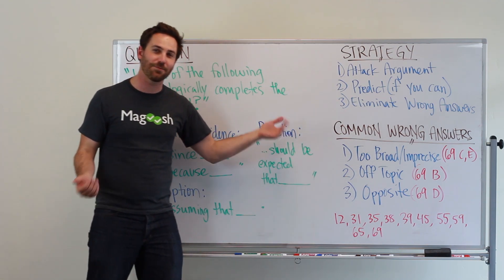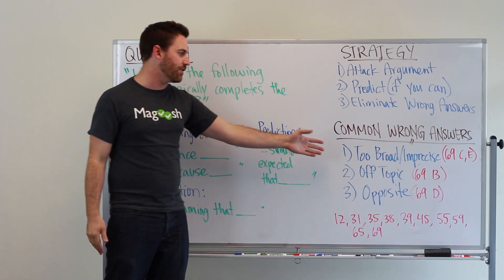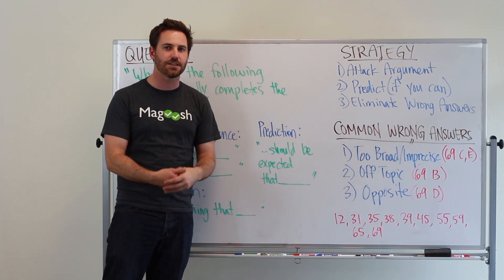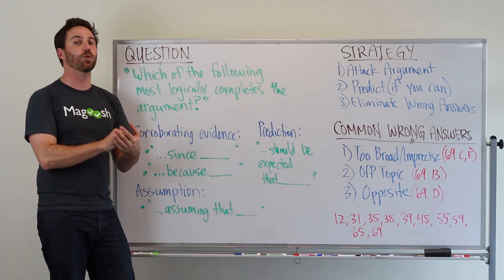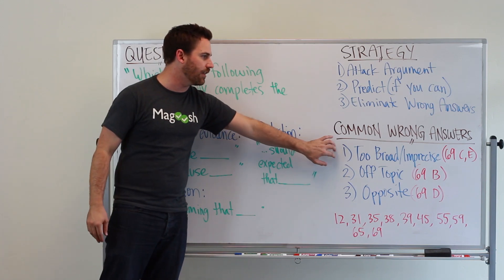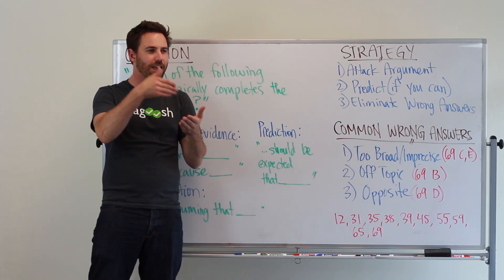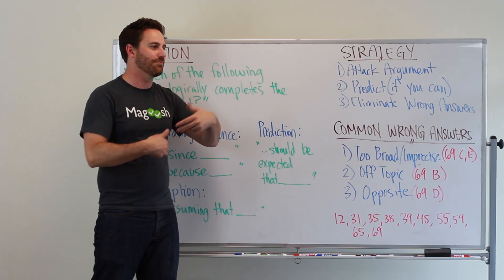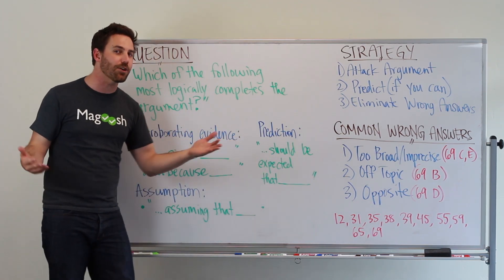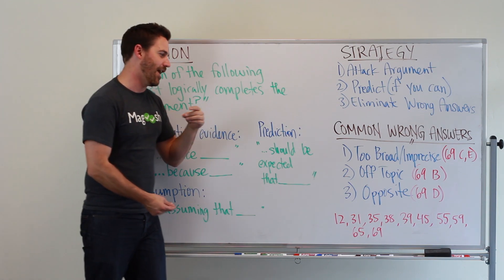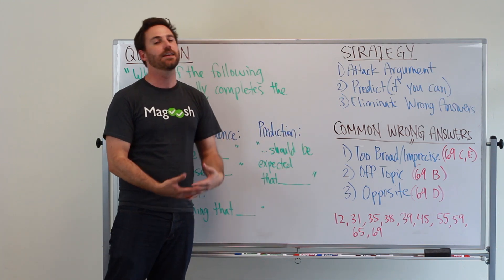There are some common wrong answers that we see with these question types. Sometimes an answer choice is too broad or it's imprecise, so it doesn't really fit neatly into the argument. It might deal with too much when really you need something that's more refined and specific. When you start explaining an answer choice and how it might be correct, that's a signal that you're walking down the wrong path. The correct answer will just be very easy to see that it fits in and you don't need to add anything to it.